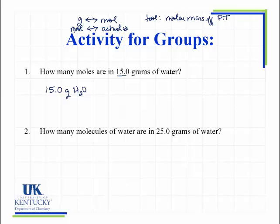To go between moles and the actual number, you're going to use as a tool Avogadro's number — 6.022 times 10 to the 23rd. There are this many of whatever you're dealing with in one mole. The actual number might be how many atoms or how many molecules — it depends on what we're dealing with.